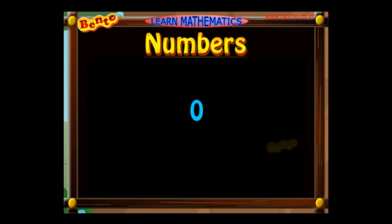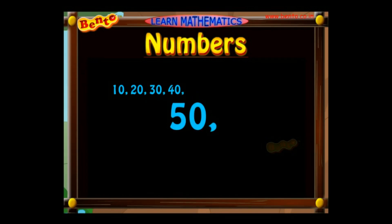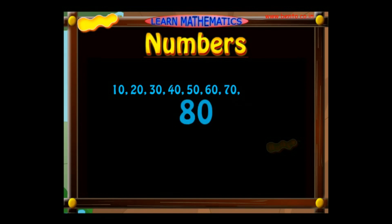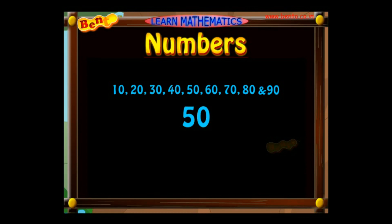Two-digit numbers that have zero in their units place are 10, 20, 30, 40, 50, 60, 70, 80, and 90. These two-digit numbers have zero in their units place.